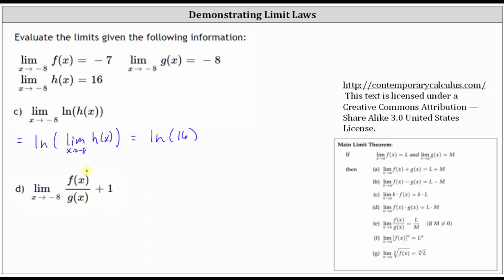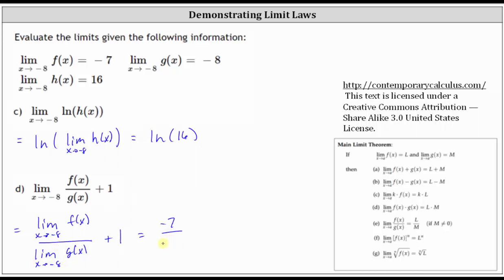For the last example, we have the limit of f of x divided by g of x as x approaches negative eight, plus one. The limit of a quotient is equal to a quotient of limits. This is equal to the limit of f of x as x approaches negative eight divided by the limit of g of x as x approaches negative eight, and then we still have the plus one. Simplifying, the limit of f of x is negative seven, divided by the limit of g of x which is negative eight, plus one. This gives us seven-eighths plus one. Obtaining a common denominator of eight and simplifying, we have 15-eighths.